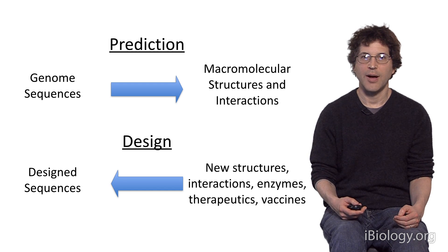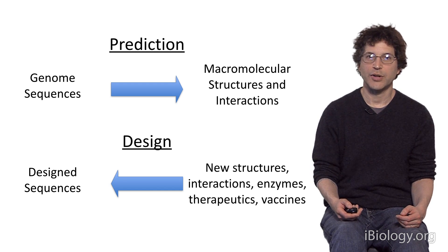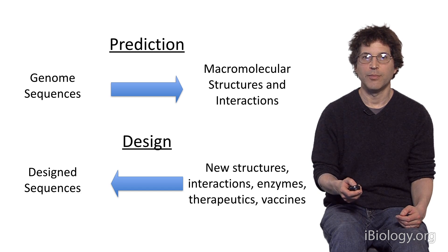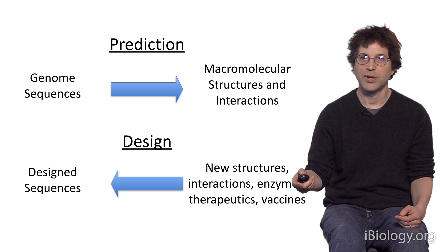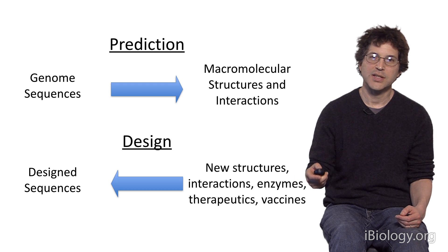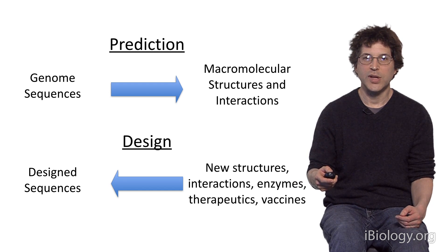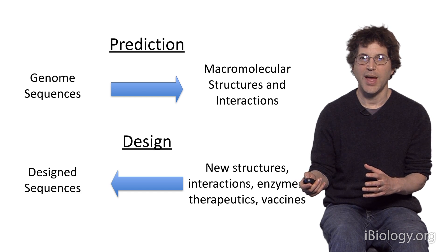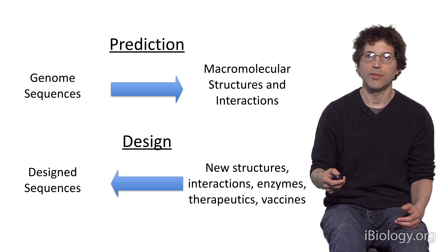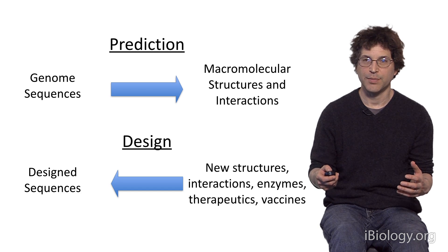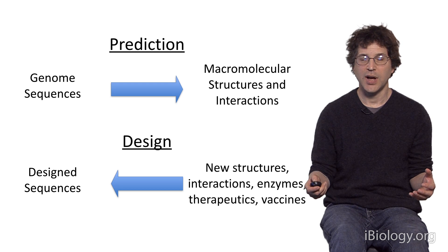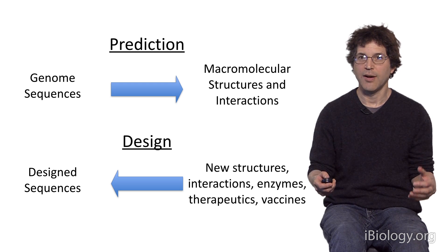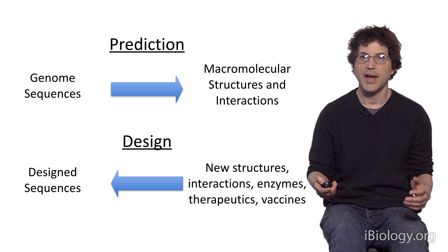Given what I've described — the algorithms for searching for the lowest energy structure for a given amino acid sequence and the algorithm for searching for the lowest energy sequence for a fixed structure — there are two problems we can approach. The first is the structure prediction problem, going from genome sequences to predict the structures and functions of proteins. The second is the design problem, where we start with something completely new and work backwards to identify a sequence predicted to fold up to that structure. For the remainder of this talk, I'm going to describe some examples of the design calculation.